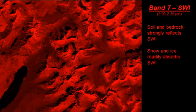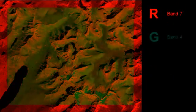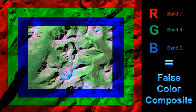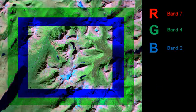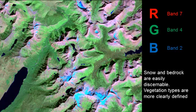We're going to investigate one more band combination that includes a short-wave infrared band — in this case band 7. Band 7 is very strongly reflected by soil and bedrock, and as we saw earlier, is also absorbed well by snow and ice. If we assign band 7 to red, band 4 to green, and band 2 to blue, we end up with a false-color composite image. A short-wave infrared composite contains at least one short-wave infrared band (5 or 7), and reflectance in this region is due primarily to moisture content. These bands are especially suited for camouflage detection, change detection, disturbed soils, soil type, and vegetation stress.